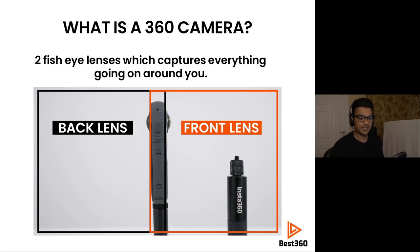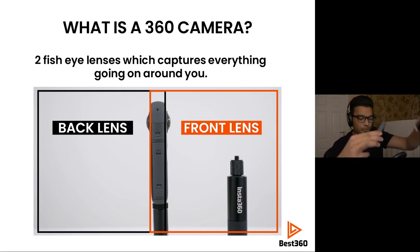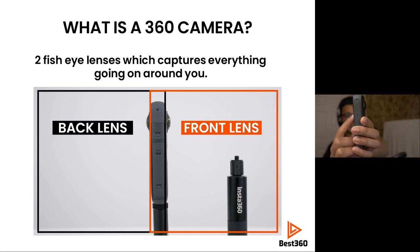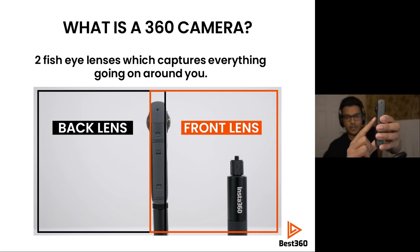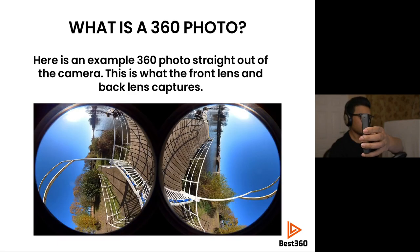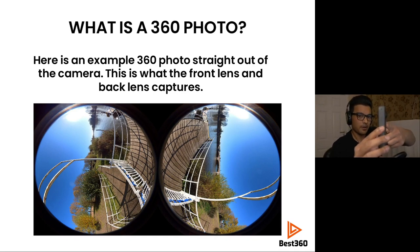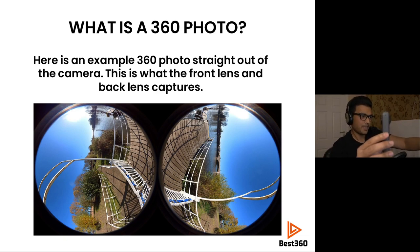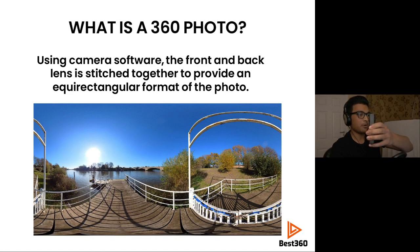You probably have a 360 camera like the 1X, 1X2, 1R, or Qcam 8K, and all of these cameras have two lenses — a front lens and a back lens. Each of these lenses can see more than 180 degrees, which means it can even see behind itself. When a 360 camera takes a photo, the next step is to turn this into an equirectangular format using the camera software — for example, Insta360 Studio.